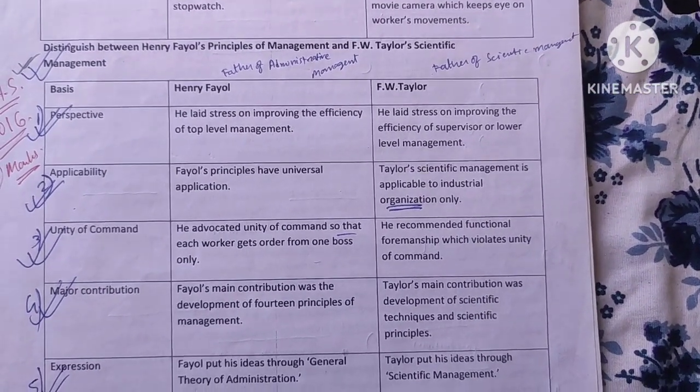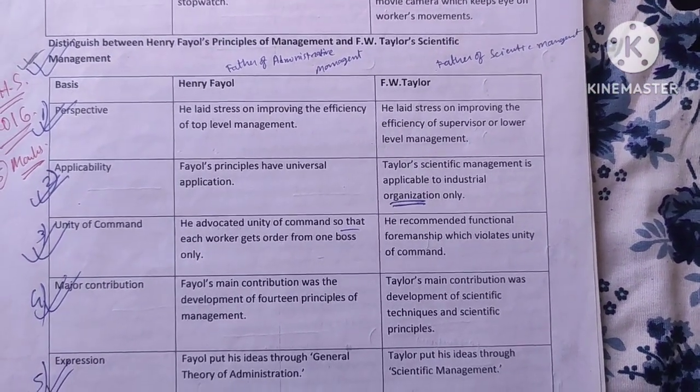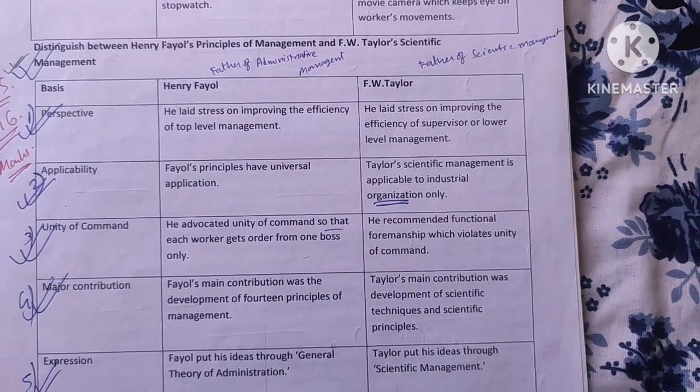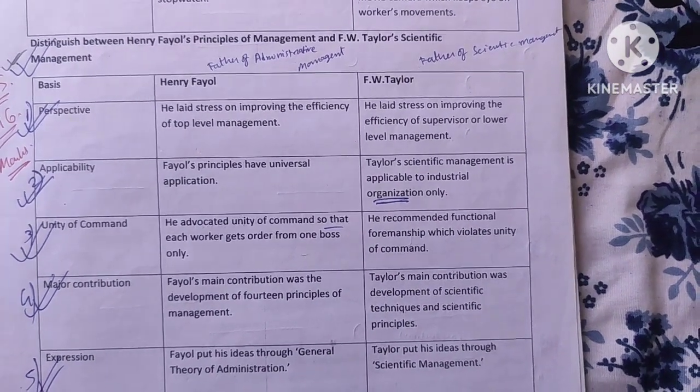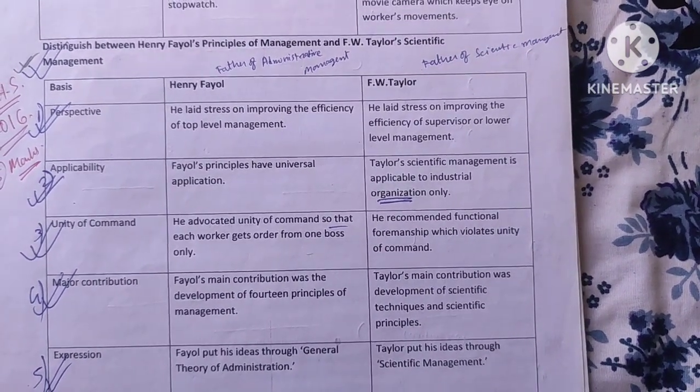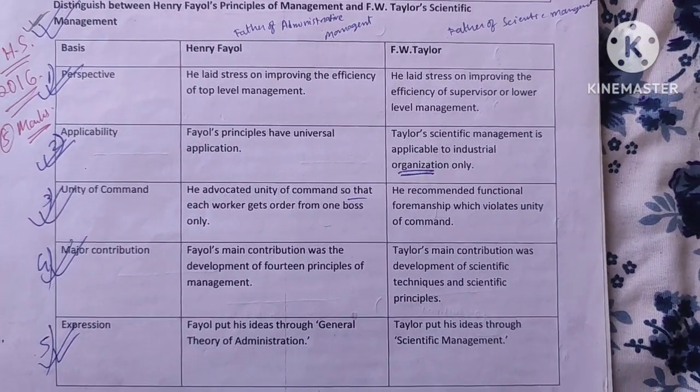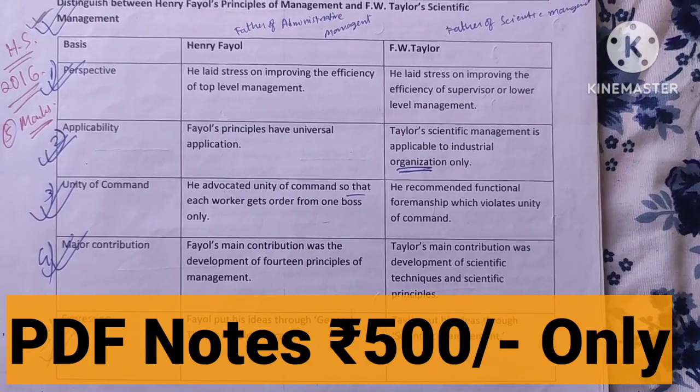First point is Perspective. Fayol stressed on improving the efficiency of top level management, while Taylor stressed on improving the efficiency of supervisors and lower level management.